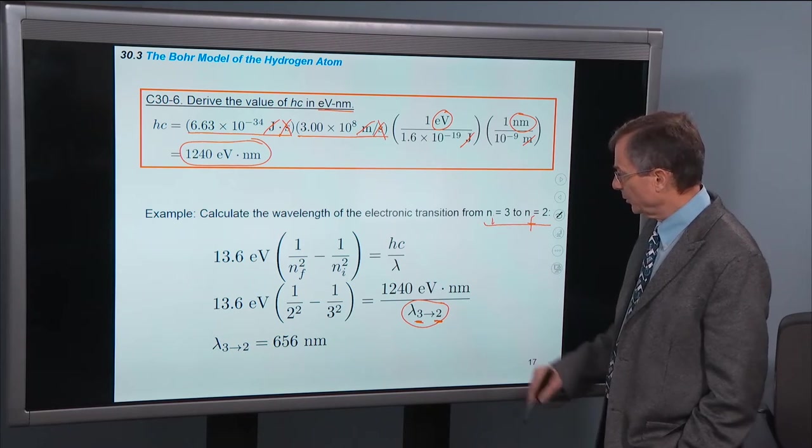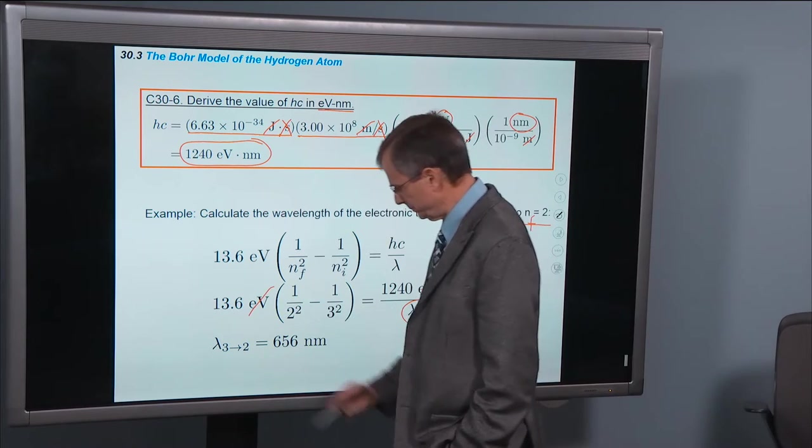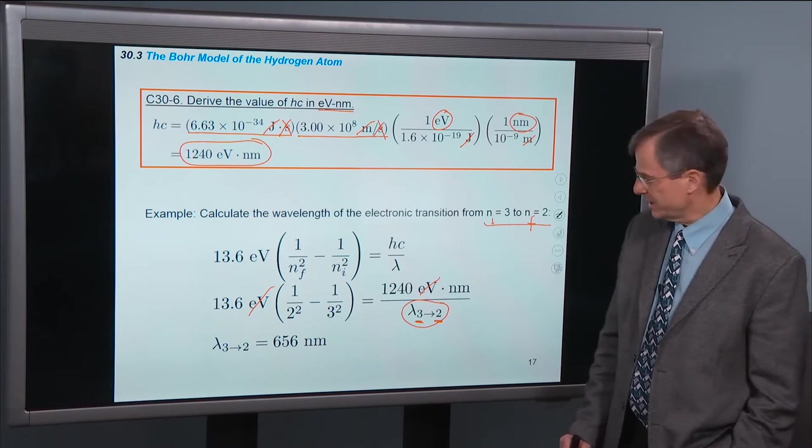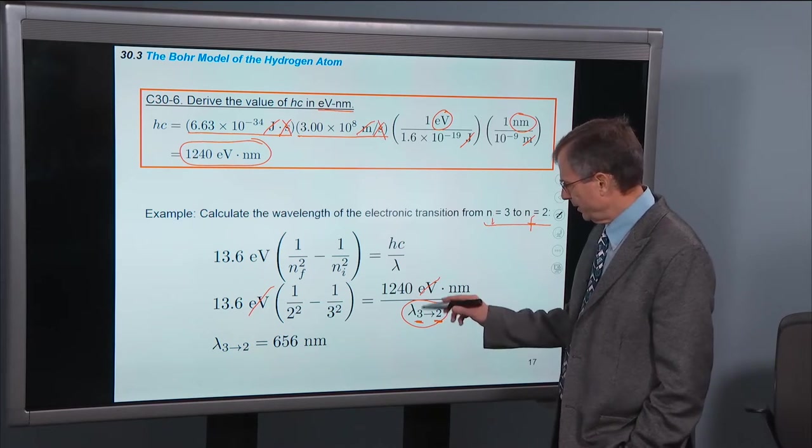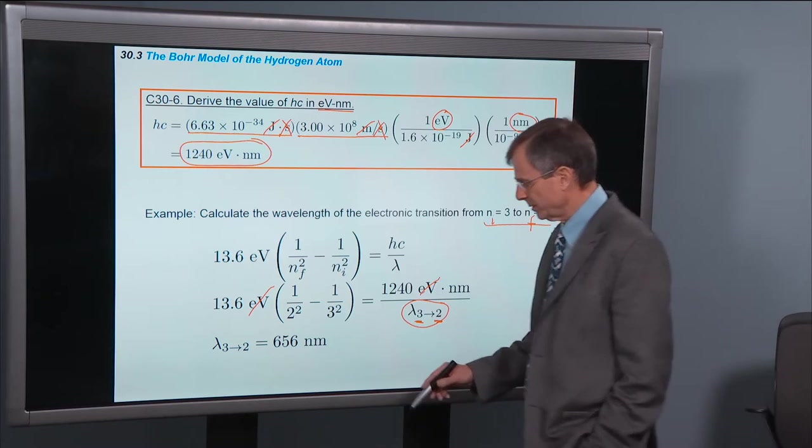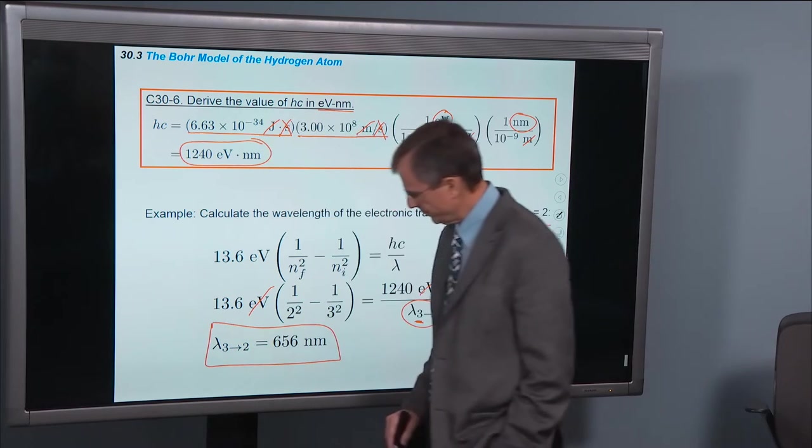Well, no problem. Plug in all the numbers. You got a number on this side. So on this side, the electron volts are going to cancel on both sides of the equation. And just do the math and solve for lambda 3 to 2. This is 656 nanometers.